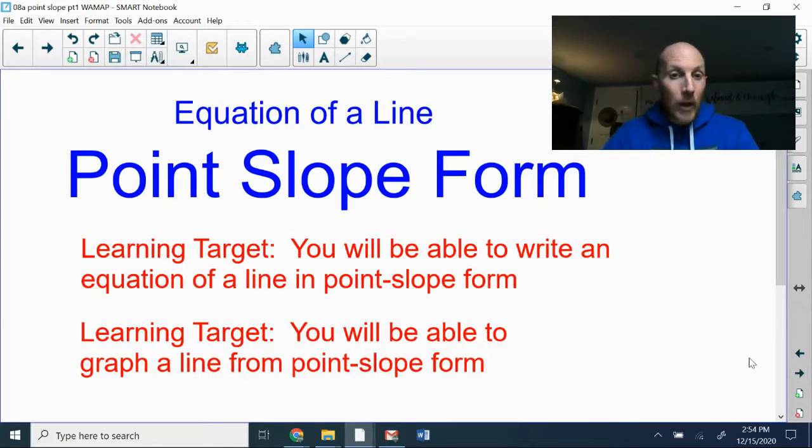Today we're going to look at point-slope form, which is a new way of writing the equation of a line. We have two learning targets. One, we'll be able to write the equation in point-slope form, either from a graph or information that we're given. And second, we'll be able to create the graph from the equation. In either case, we're going to need to identify key information and either put it into or pull it out of this equation.